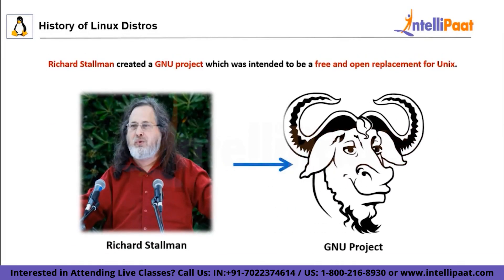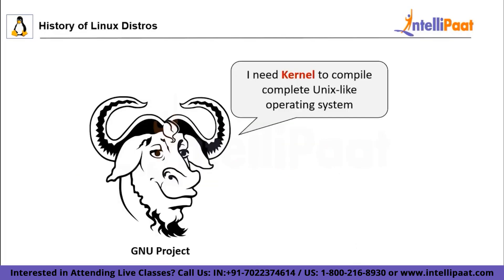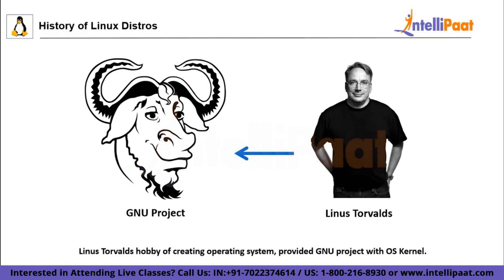A few years down the line, later in 1983, Richard Stallman created the GNU project, which was intended to be a free and open replacement for Unix. But Unix was a big, complex project with hundreds of different applications and replacing it was no easy task. Over the next few years, the project recreated many applications — tools synonymously used with Linux like Tar, Bash, Emacs, just to name a few. By the early 90s, GNU had all the great software but was missing one important component: the operating system kernel. A complete operating system needs a kernel to sit between the hardware and the software, where it can allocate resources such as CPU and memory to run software applications.